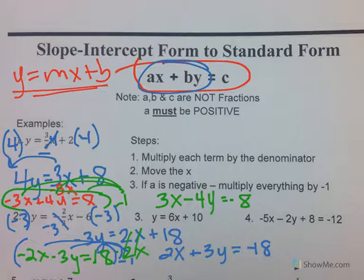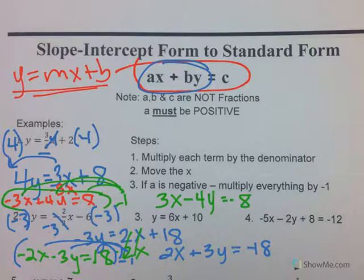You're going to do numbers three, four, and five by yourself. If it doesn't have a denominator, you just skip that step and move the x over first. Like number three — it doesn't have a denominator, so skip that step, move the x, and then if a is negative, multiply everything by negative one. Try numbers three, four, and five.